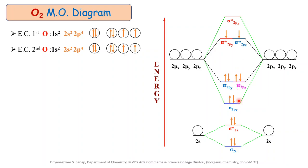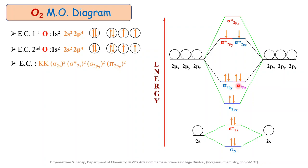On the basis of this molecular orbital diagram, we can write the electronic configuration. We write KK to represent the 1s electrons of both oxygen atoms, which do not take part in bonding. The electronic configuration is: KK (sigma 2s)2 (sigma star 2s)2 (sigma 2px)2 (pi 2py)2 = (pi 2pz)2 (pi star 2py)1 = (pi star 2pz)1. There is one electron in each of the antibonding pi star orbitals of the O2 molecule.